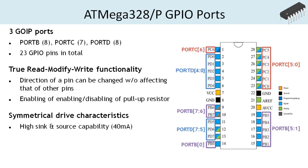The output buffer of GPIO ports has symmetrical drive characteristics, meaning the output buffer is equally good at sourcing or sinking the same amount of current through the port pin when driven high or low respectively. The output buffer of the pins uses complementary MOSFET, where P and N field effect transistors of closely matched characteristics are used to achieve such symmetrical performance. The ATmega328 microcontroller can source and sink 40 mA of current through its GPIO pins.